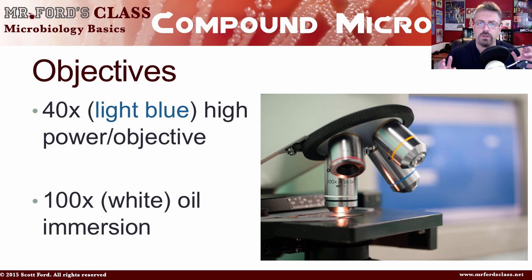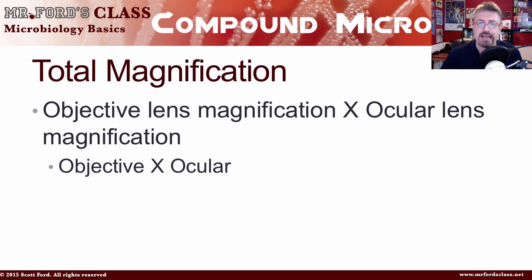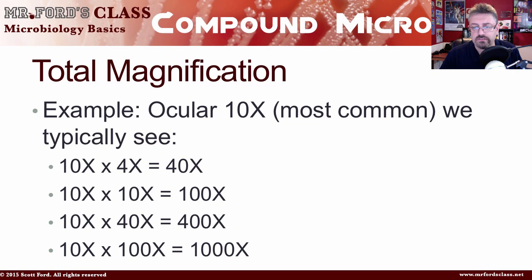We can combine these into total magnification: the objective lens magnification times the ocular lens magnification. The ocular lens is typically 10x, the most common magnification. So using the objectives 4x, 10x, 40x, and 100x, multiplied by the 10x eyepiece, you get total magnifications of 40x, 100x, 400x, and 1000x. Not hard math, but it will show up on an exam, and those are easy points to miss if you're not paying attention.